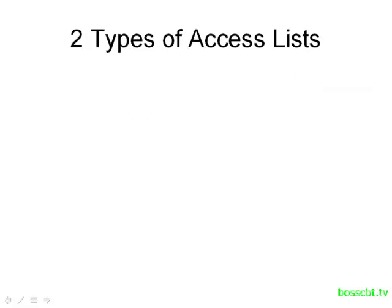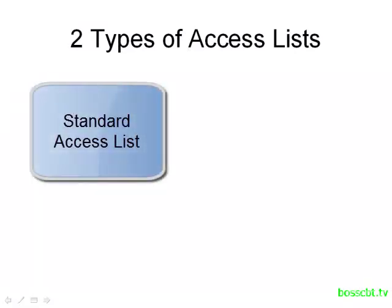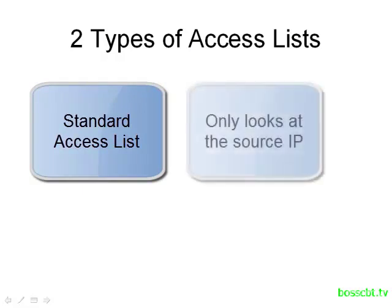There are two types of Access Lists. The first one is known as the Standard Access List, and that's the simpler of the two types. A Standard Access List uses the source IP address information only to identify traffic. So when you're looking at a packet, the source IP of that packet is examined. The destination IP and any higher layer protocols like TCP and UDP are not considered.